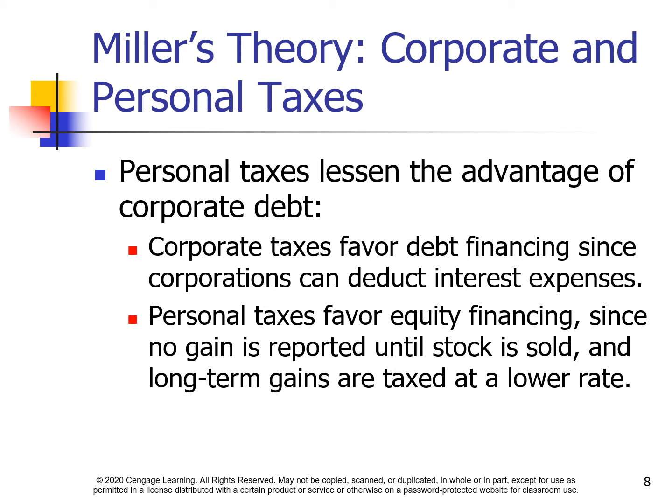Miller's theory: corporate and personal taxes. Personal taxes lessen the advantage of corporate debt. Corporate taxes favor debt financing, since corporations can deduct interest expenses. Personal taxes favor equity financing, since no gains are reported until stock is sold, and long-term gains are taxed at a lower rate.